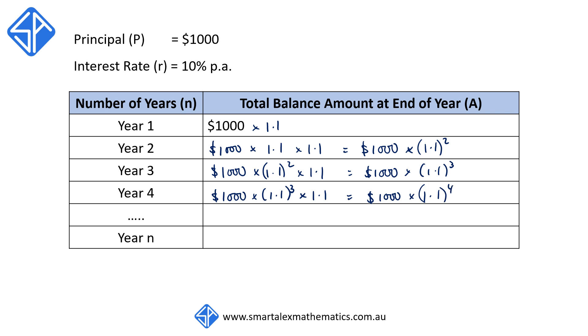So we can see here that the 1,000 remains the same throughout the year. The 1.1 remains the same throughout the year.